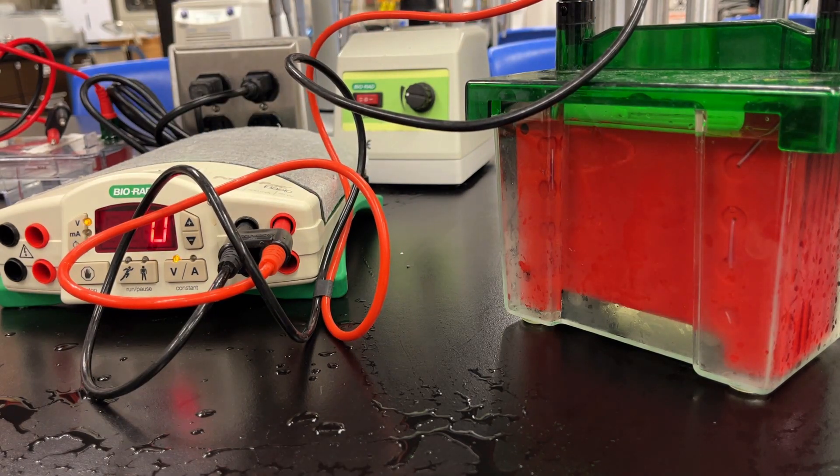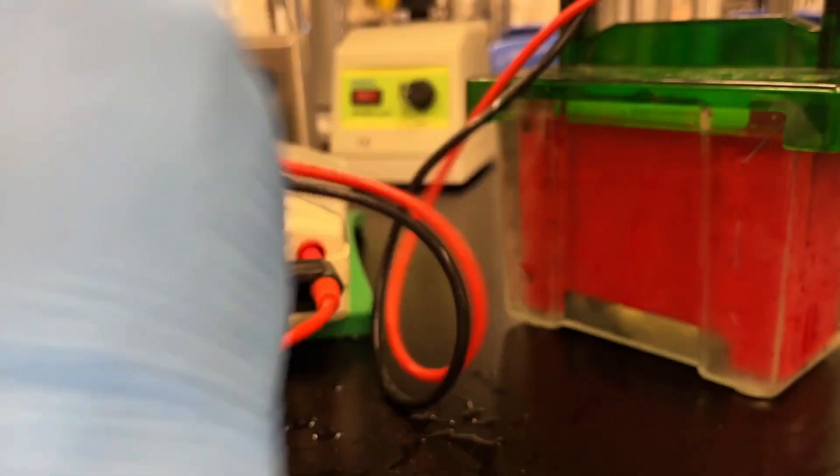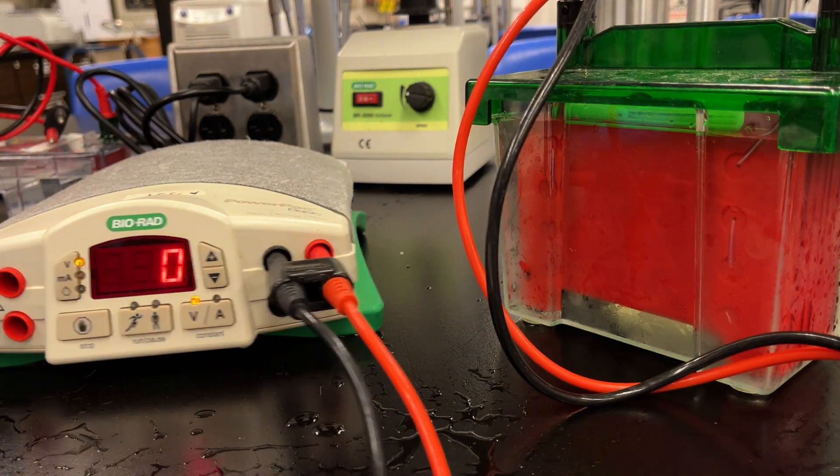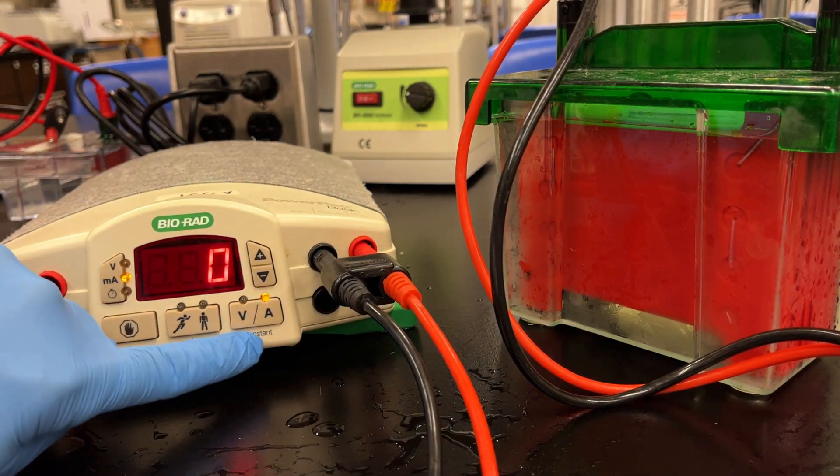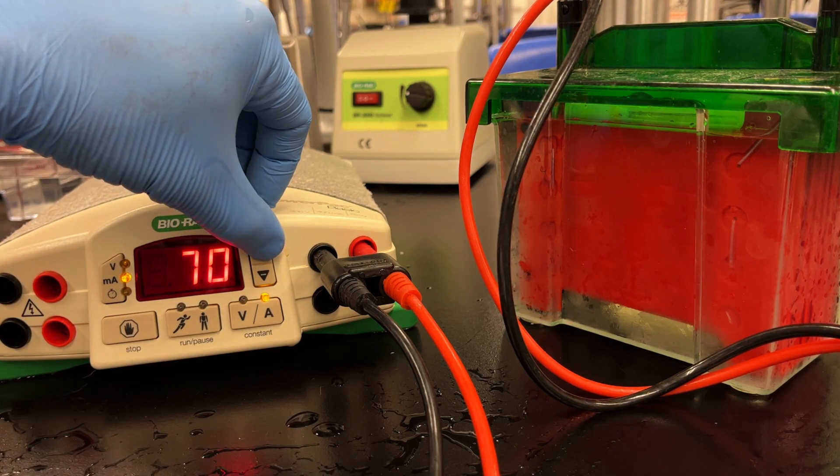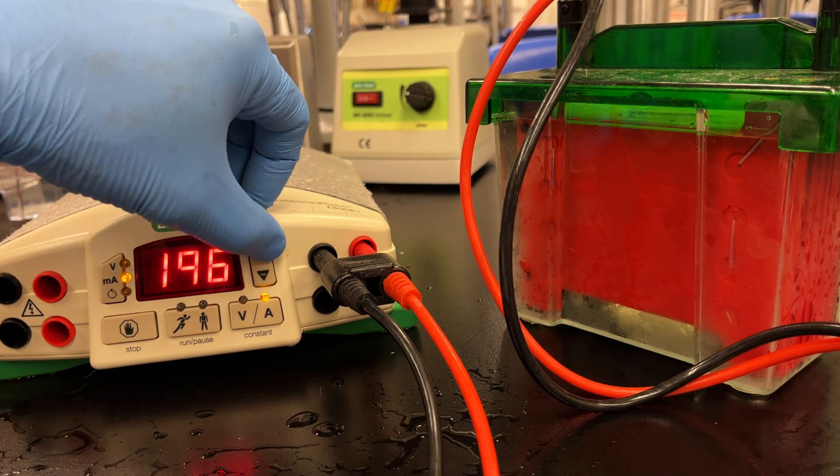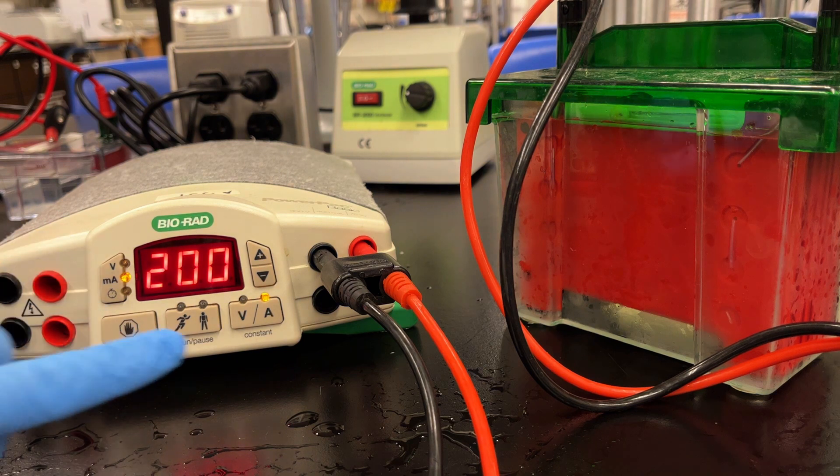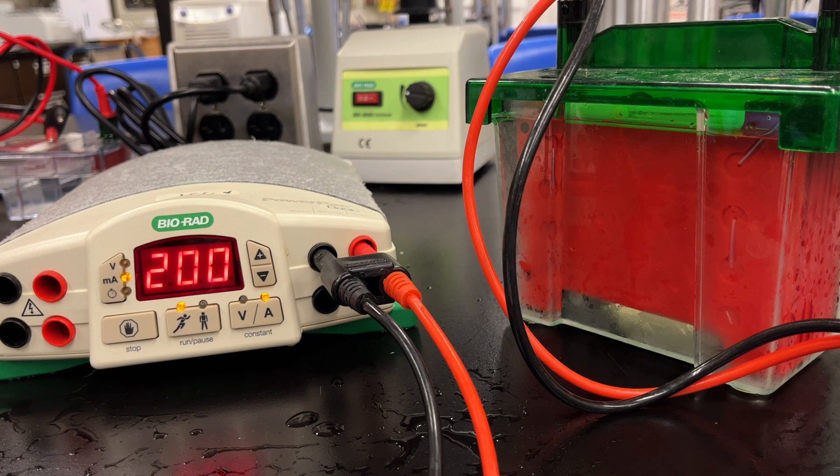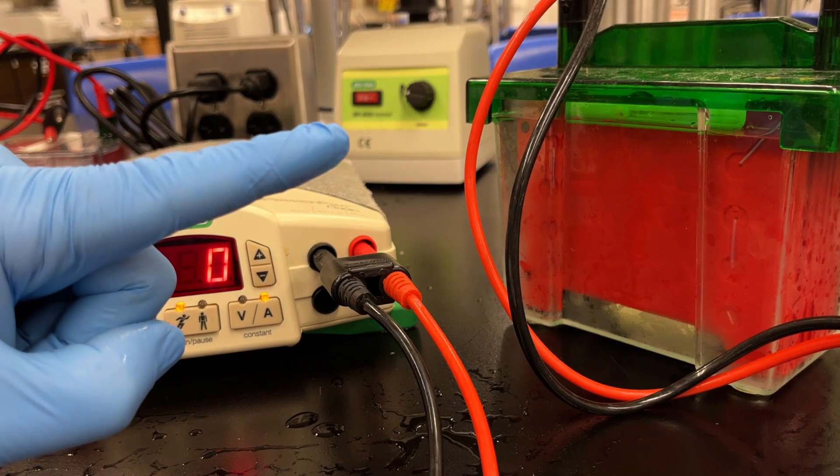And then unlike our transfers in the past, or sorry, our runs in the past where we go with constant volts, make sure that we go constant amp. So once again, get the darn cables out of the way. Constant amp. And we're going to run it at 0.2 amps or 200 milliamps. So this power supply reads it in milliamps. So 200 milliamps. And then we transfer for 60 minutes. So constant amps. Make sure it's 200. Hit the running person. And then you can set the timer to 60, but I generally don't just in case I don't make it back in time.